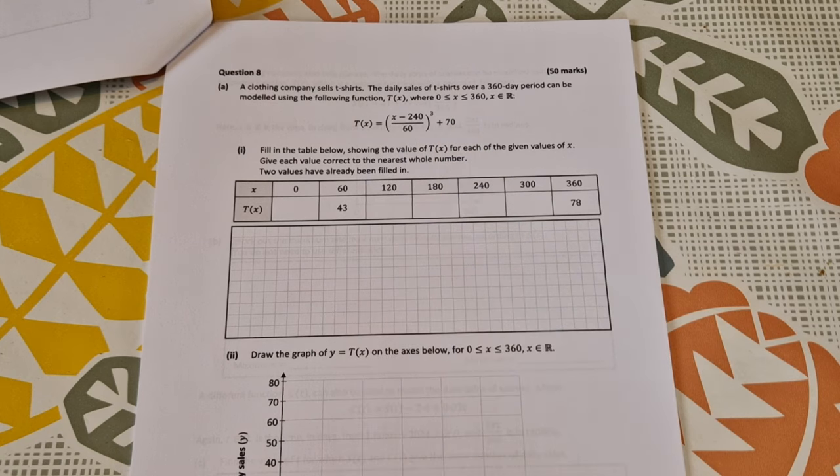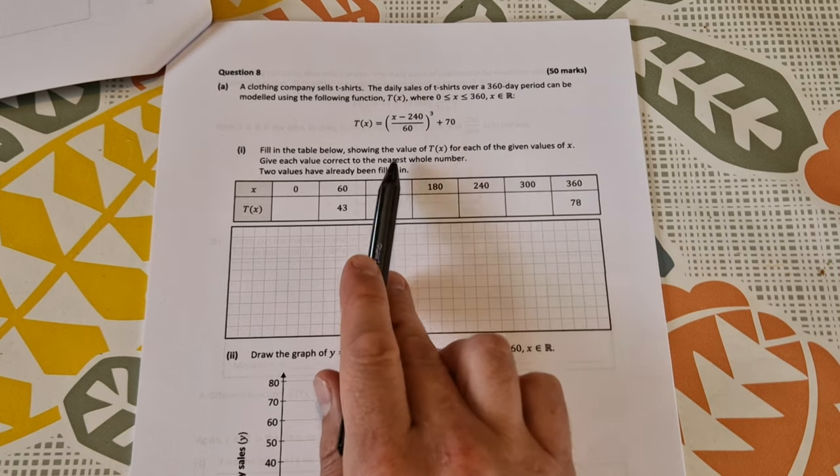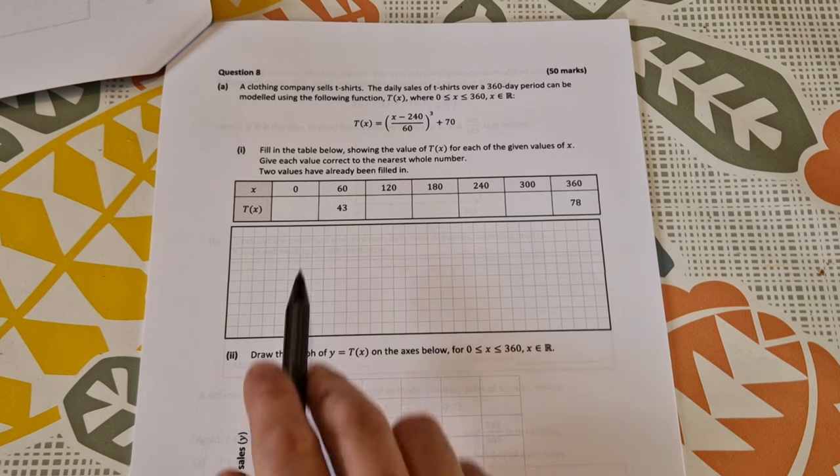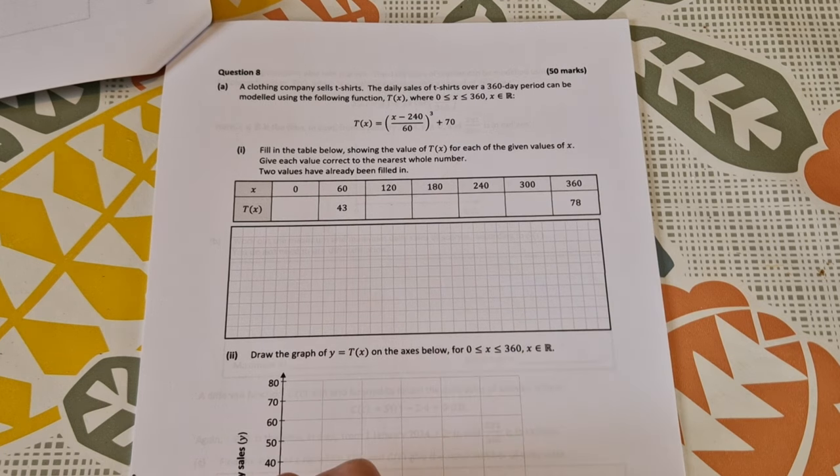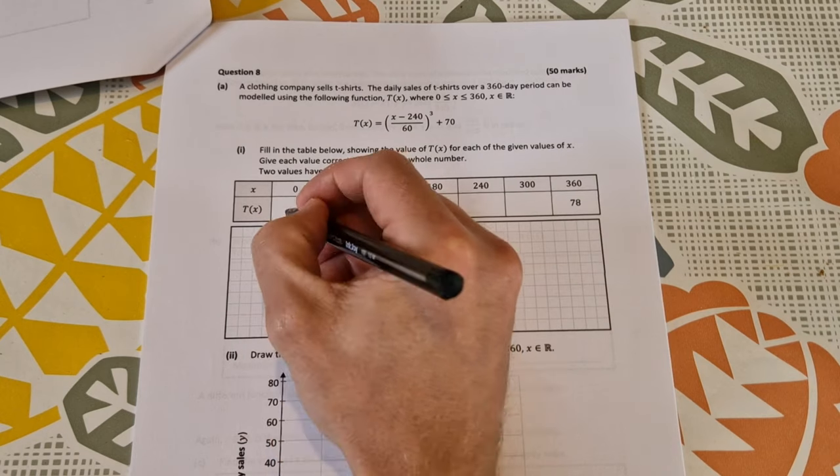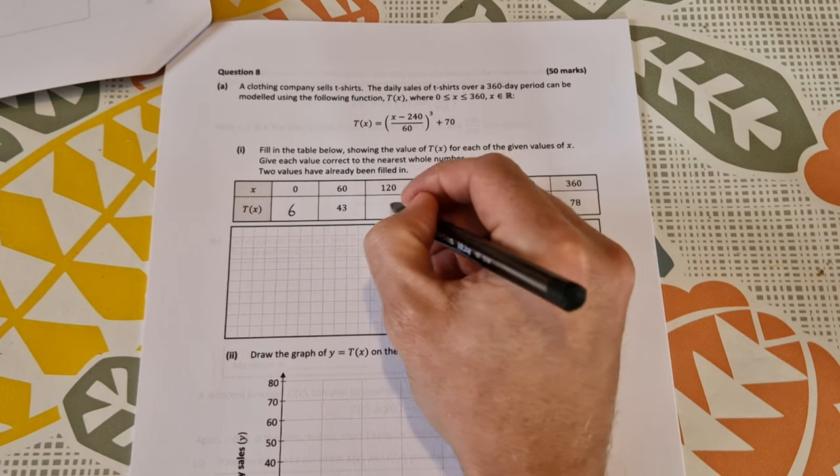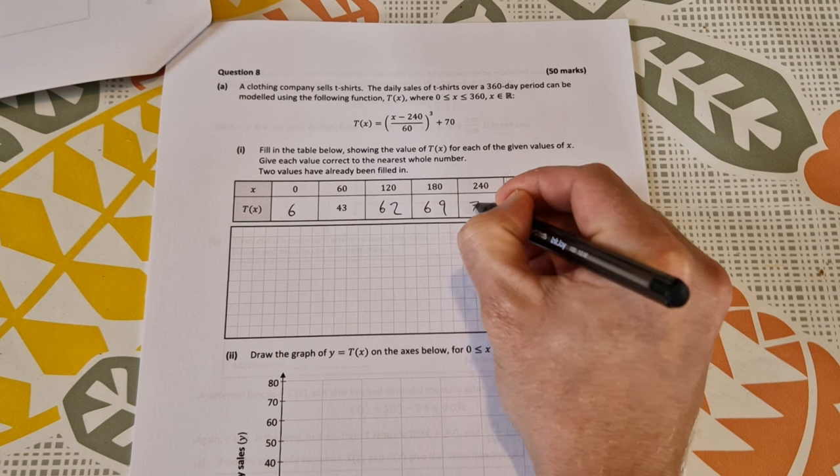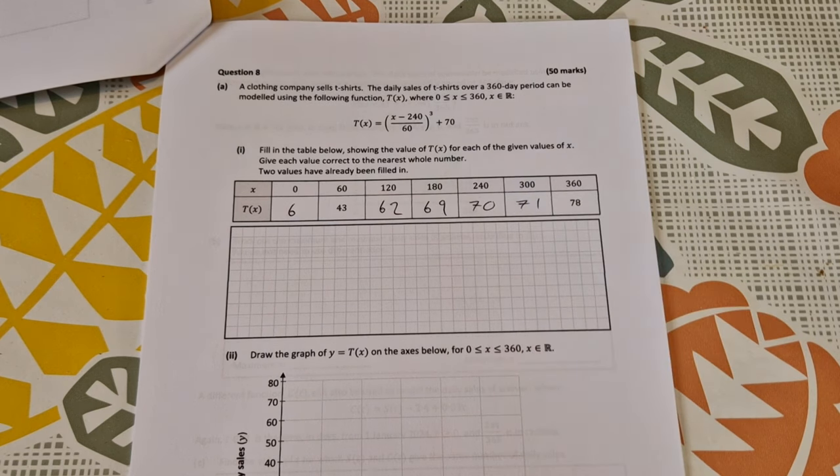You just need to sub in each of these values into your calculator to get this, or you can use the function formula and do steps of 60, whichever suits yourself. So you get 6, 62, 69, 70, and 71 for those values there.